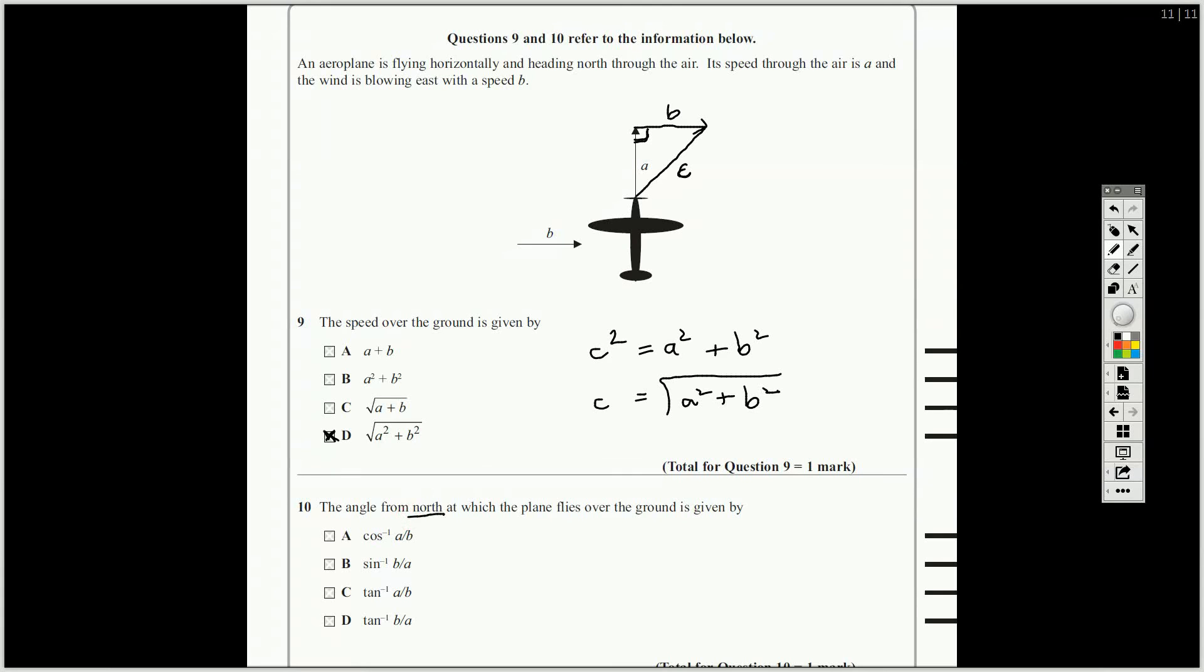Then the angle from north, okay, so north is upwards. In this case, it's heading north. North's up here. Okay, so the angle from north is that angle there. Let's call that angle theta. We know A and B, and we know our trigonometry rules, off by heart, I'm sure. Okay, so you've got the opposite, which is B, and you've got the adjacent, which is A. So you're going to use tan, or an angle is opposite B over adjacent A. So theta is tan to the minus 1, B over A, so there we go, D.